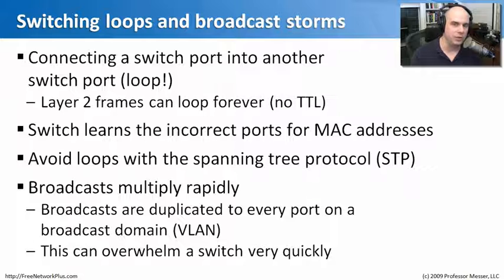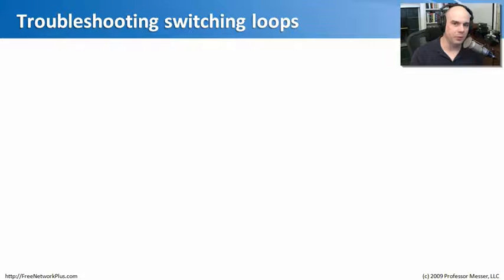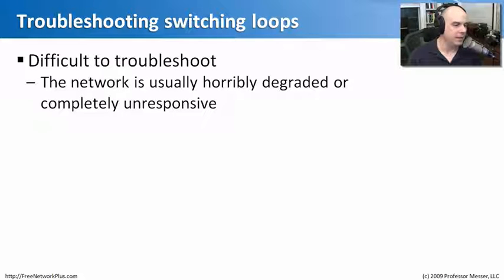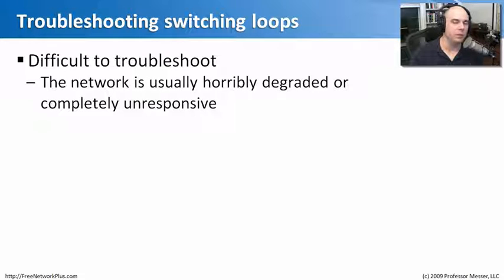That's why when we talk about change control and testing things after you make a change, this is one of the really good reasons to do that. If you're troubleshooting a switching loop, it's going to be tough because as soon as you create that loop, the network crawls to its knees. Most equipment just cannot handle that much traffic being looped constantly, and sometimes it requires fixing the loop and rebooting your core switch to make the problem go away.